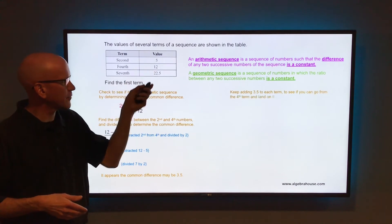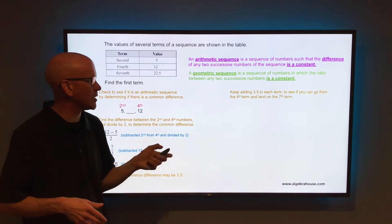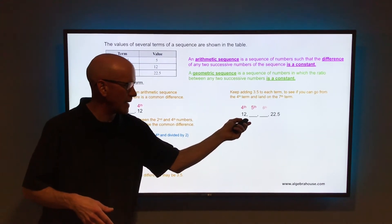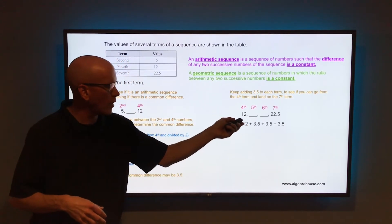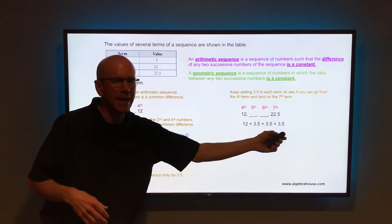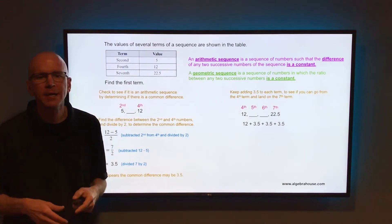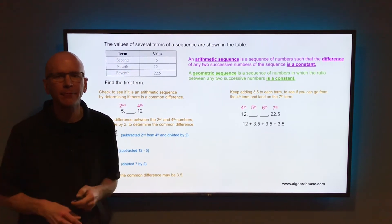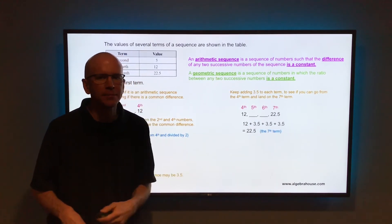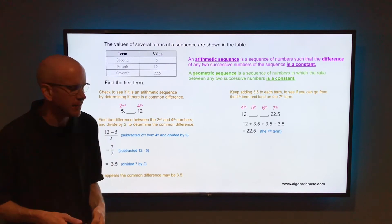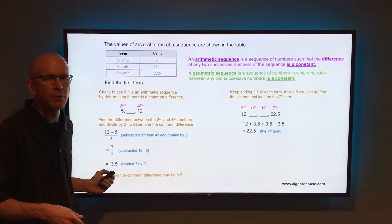So when you go from that fourth term of 12 to that seventh term of 22.5, you would be adding that common difference three times. So if we can go from 12 to 22.5 by adding 3.5 three times, that verifies that the common difference is 3.5. And it is. If you start at 12 and add 3.5 three times, you end up at 22.5. So the common difference is 3.5.